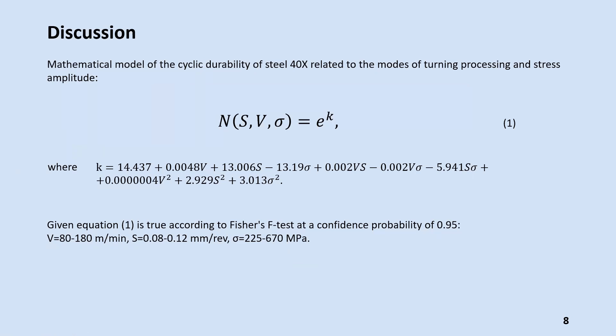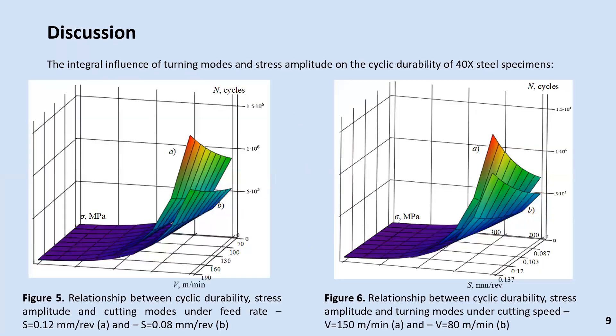Based on the results of experimental studies and its correlation by the method of multiple regression data analysis, the mathematical model of the cyclic durability of structural steel related to the modes of turning and processing and stress amplitude was found. The integrated influence of turning modes and stress amplitude on the cyclic durability of steel specimens is shown in Figures 5 and 6.